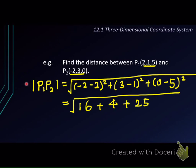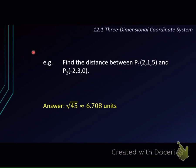And this will give us the square root of 45 units. So, if you prefer to put it in decimal point, then we will get 6.708 units, approximately.